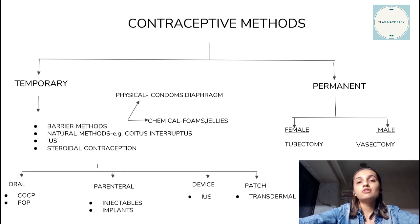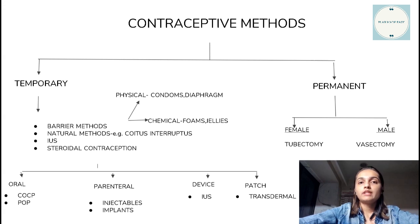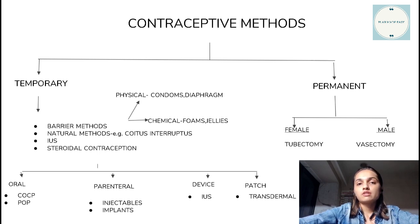The next method is the intrauterine contraceptive device, which includes the insertion of a copper device into the uterus. This acts as a mechanical barrier and also releases a small amount of copper every day which acts as a spermicidal agent, helping in preventing pregnancy.